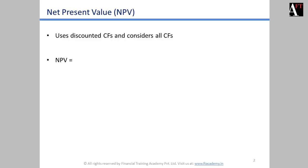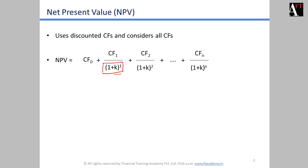NPV is calculated by discounting the cash flow stream at the appropriate discount rate k. The denominator part — 1 plus k raised to the year in which the cash flow occurs — is the discounting factor. So 1 divided by (1+k)^1, (1+k)^2, and so on are the discounting factors, which are multiplied by the individual cash flows to get the present value stream. When we total all those present values, what we get is called the net present value.